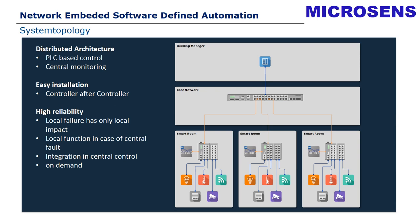Typically for this structure is a distributed architecture which is PLC-based, where automation runs at the PLC level, and central monitoring is provided at the management layer. We have easy installation — because it can be done controller by controller, room by room, during a running system. This also provides high reliability, since if a failure happens, it only impacts the local unit that created the error. The devices can be integrated into a central control on demand, enabling step-by-step building automation.